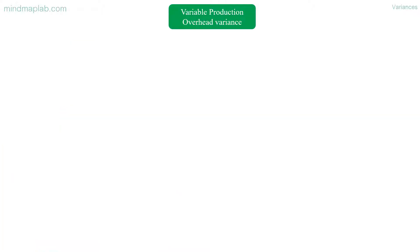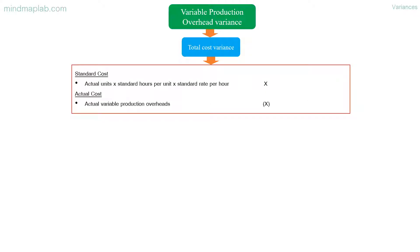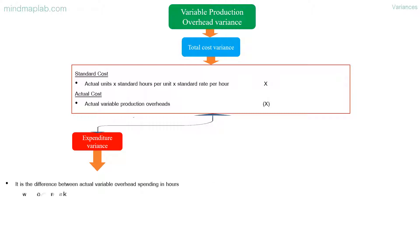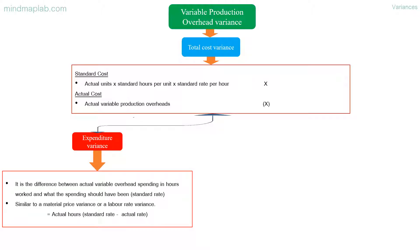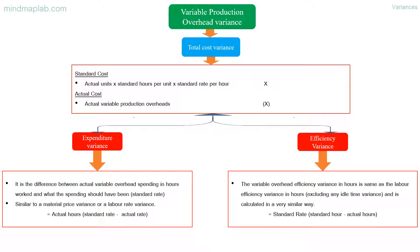Variable production overhead variance — total cost variance is the difference between standard cost (actual units multiplied by standard hours per unit multiplied by standard rate per hour) and actual variable production overheads. Expenditure variance is the difference between actual variable overhead spending in hours worked and what the spending should have been — similar to a material price variance or a labor rate variance. It is calculated as: actual hours multiplied by the difference between standard rate and actual rate. Efficiency variance: the variable overhead efficiency variance in hours is the same as the labor efficiency variance in hours, excluding any idle time variance. It is calculated as: standard rate multiplied by the difference between standard hours and actual hours.